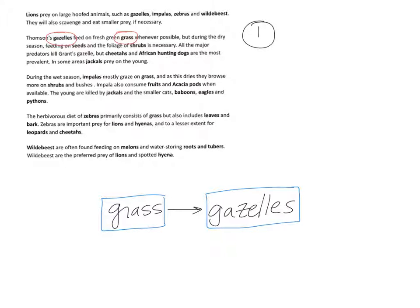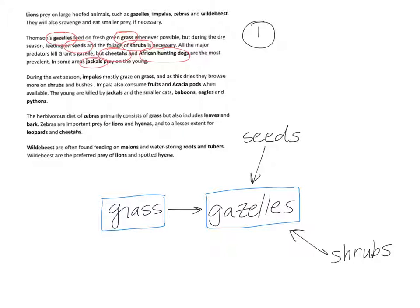It says gazelles also feed on seeds and shrubs, so I'll do more arrows going to the gazelles showing that they eat seeds and shrubs. This same food web continues for all of the different animals and plants. Just to double check and make sure your arrows go in the right direction — they should always go in the direction of the movement of the energy, from the organism that's being eaten to the organism that's doing the eating.